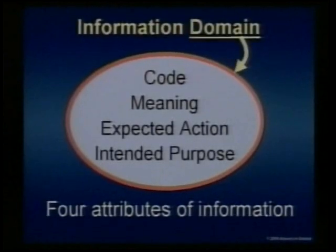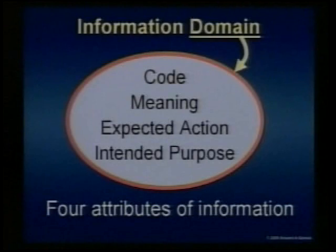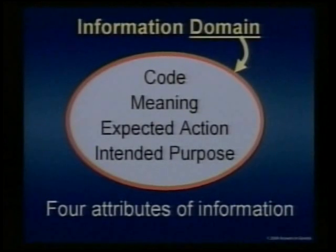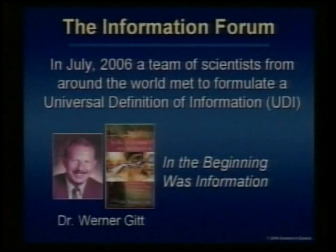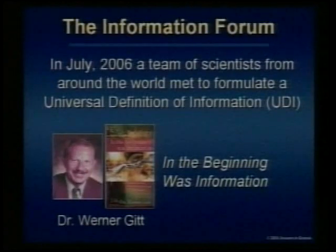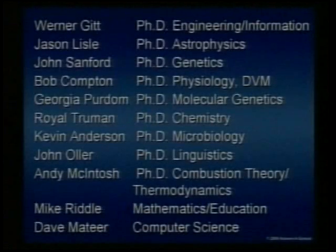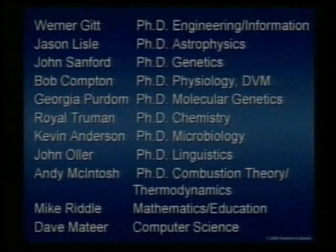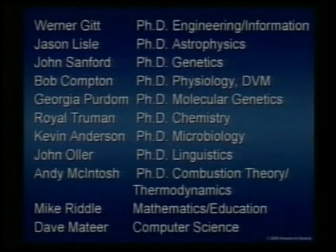Those are the four attributes, and we call that our information domain — those four things. Remember when we got to a definition of a definition? We said you've got to get very clear and precise, say what is included and what is not included. Here are the four things that are included with information. If any one of those is missing, then it's not going to be information based on the definition we're going to arrive at. In July 2006, a team of scientists from around the world met to formulate what we call the universal definition of information, based off of the work from Dr. Werner Gitt. We had a very diverse team — very seldom will you ever see people from these cross-disciplines coming together and agreeing on anything. But we achieved that. We spent a week, five days, enclosed in a room, and our purpose was to come up with this universal definition to see how powerful it would be against materialism.